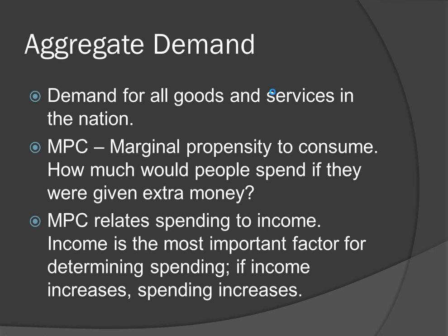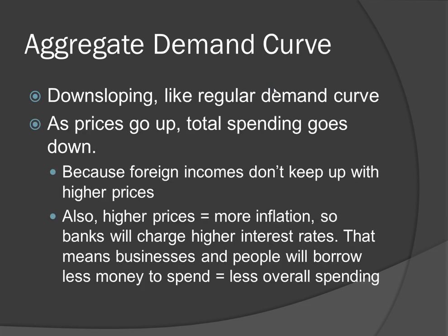The counterpart to aggregate supply is called aggregate demand, which is the demand for all goods and services in a nation. An important concept related to aggregate demand is called the MPC, or the Marginal Propensity to Consume. It's a number that shows how much people will spend per given extra dollar. If my MPC is 0.85 and I get another dollar, that means I'll keep 15 cents and spend 85 cents. MPC also relates spending to income — if people get more money, they'll also spend more. The curve for aggregate demand is downsloping, like a regular demand curve, because overall spending is less at higher prices. When prices go up, foreign incomes don't change, meaning less goods will be exported, decreasing total spending. Also, higher prices lead to more inflation, so banks will charge higher interest rates, and with higher interest rates, businesses and people will borrow and spend less money.